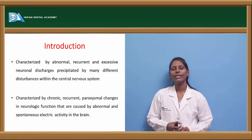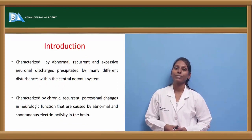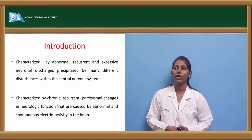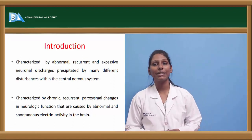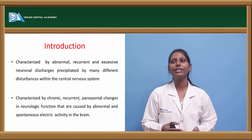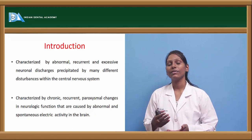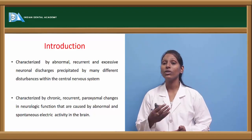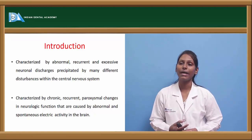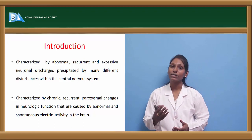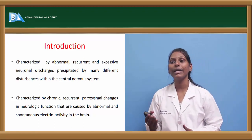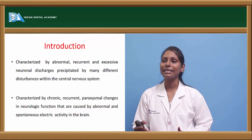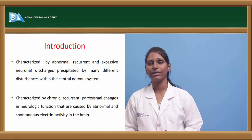Epilepsy is characterized by abnormal, recurrent, and excessive neuronal discharges that are precipitated by many different disturbances within the central nervous system. It is also characterized by chronic recurrent paroxysmal changes in neurologic function caused by abnormal and spontaneous electric activity within the brain.